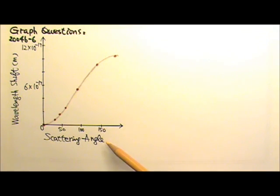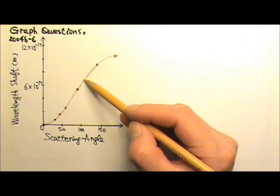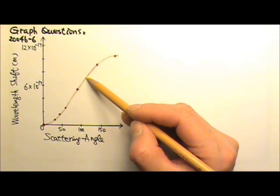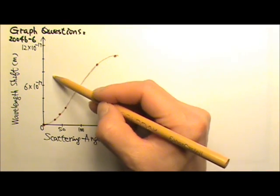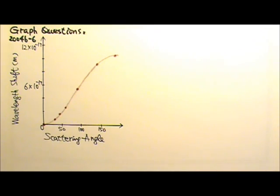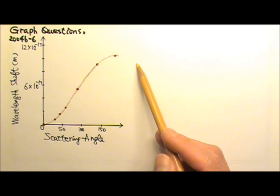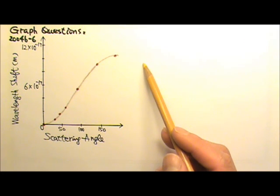For example, the next question asks for the wavelength shift at 120 degree angle. We would just read off the graph using the best fit curve for 120 degrees. Do not read off the data points dots, because the smooth best fit curve usually helps us even out some errors in the experimental data.